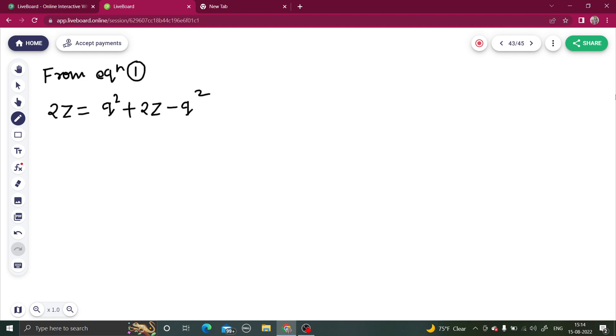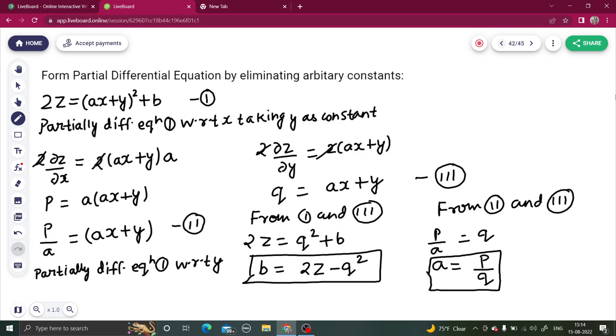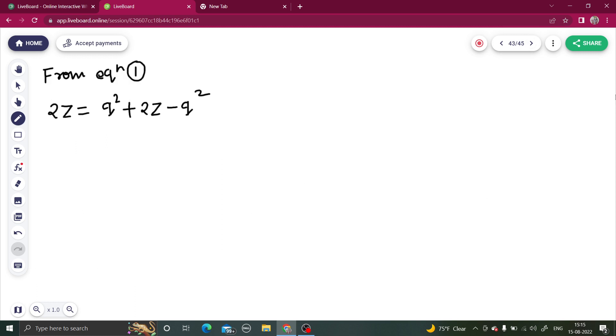So this is cancelling, so I think this equation is a bit wrong, we will have to go back and see. So p equals to, p by a equals to q, so your a equals to p by q. Instead of putting the value of ax plus y directly as q, what we can do here is use value of a also in this equation.